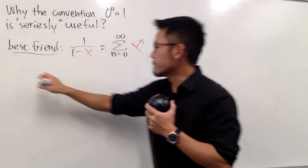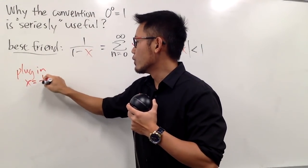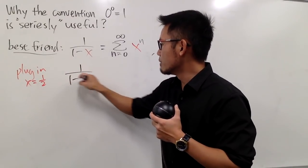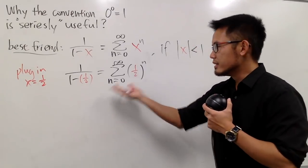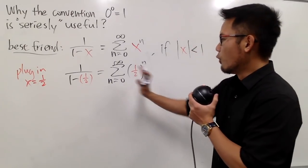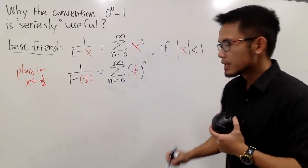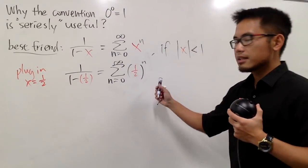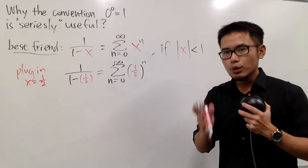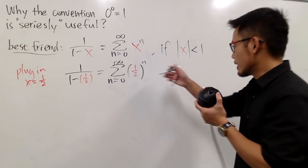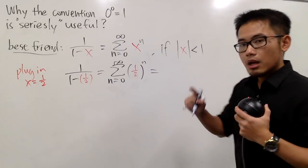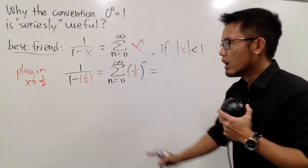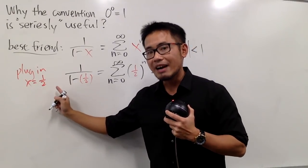As long as the absolute value of x is less than 1, this is legit. So I can say I can plug in x is equal to 1 half. And when I do that, I get 1 over 1 minus 1 half, like this, right? And this is pretty much the form of the power series for that. Now, of course, the left hand side is just a number. The right hand side is an infinite series.